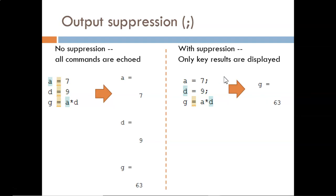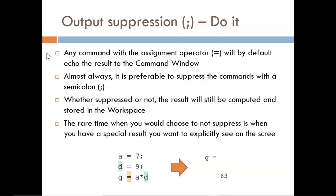On the right half, though, I place a semicolon at the end of the first two statements, so only the last one has its result displayed in the command window. Any command with the assignment operator included will by default echo the result to the command window. This is a waste of time and it clogs up your screen, especially when we deal with large matrices. So, almost always, you should suppress the output with this semicolon.